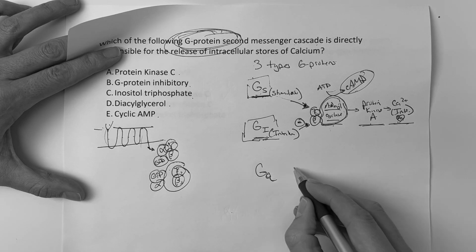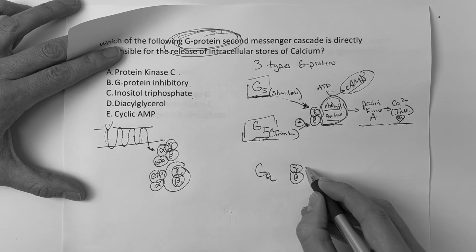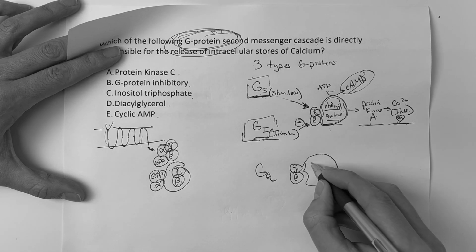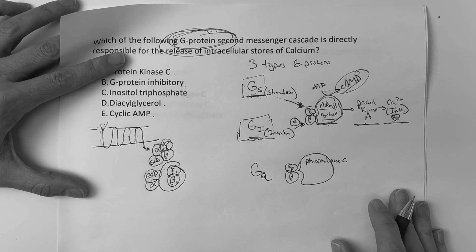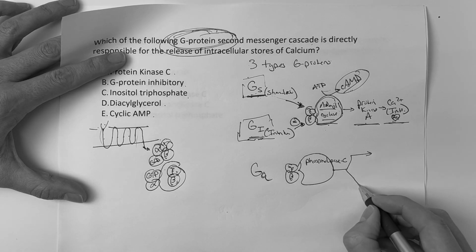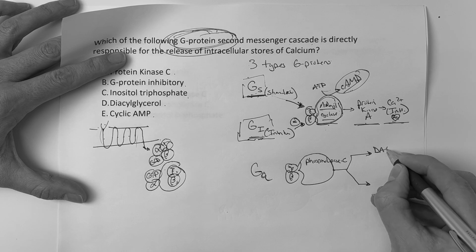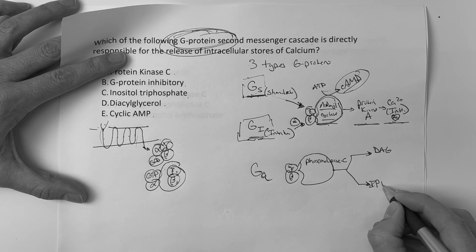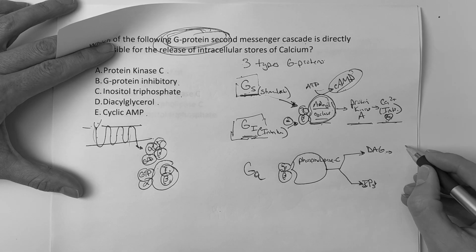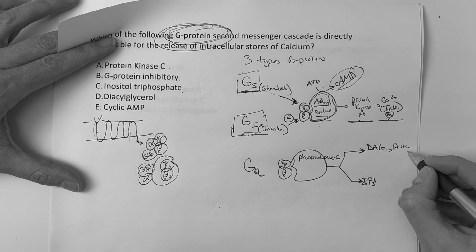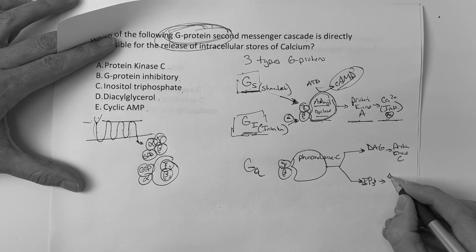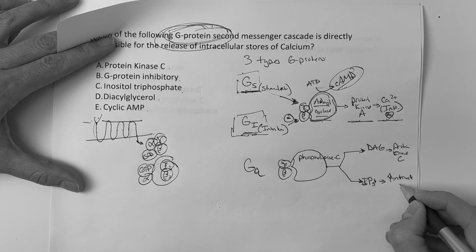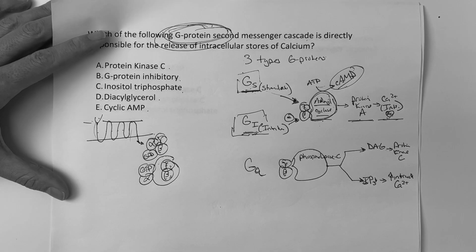Then we have GQ. This one attaches to phospholipase C. Phospholipase C branches into two: diacylglycerol and inositol triphosphate (IP3). Diacylglycerol gives you protein kinase C, and inositol triphosphate gives you an increase in intracellular calcium.